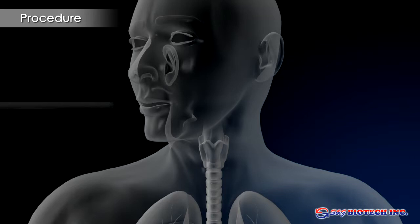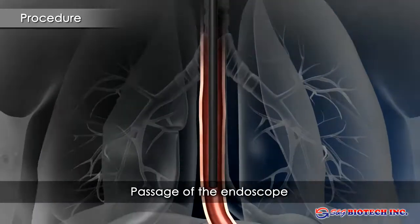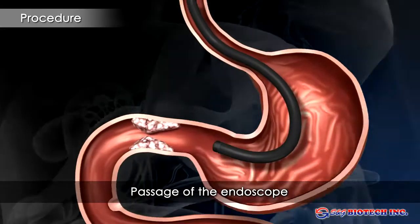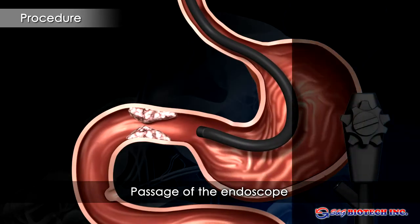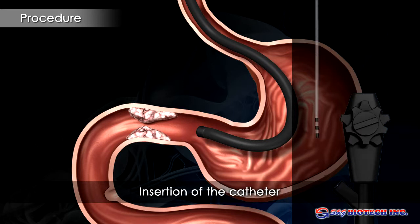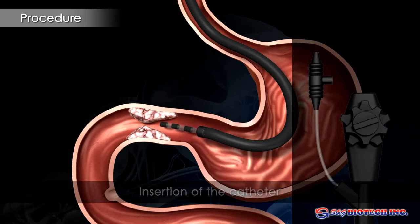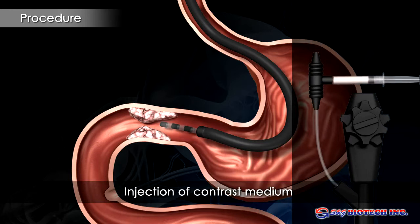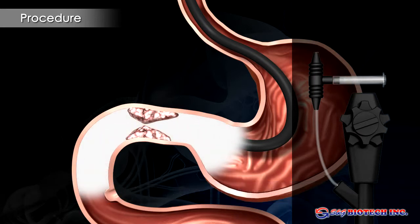An endoscope is passed through the stomach to the proximal end of the stricture. A therapeutic endoscope with a large working channel is preferable, as it allows stent placement through this. A catheter is inserted through the working channel.